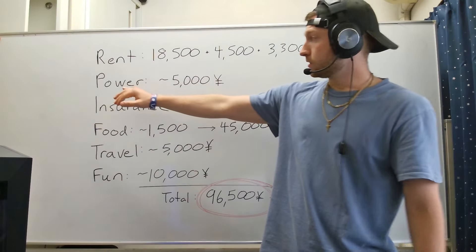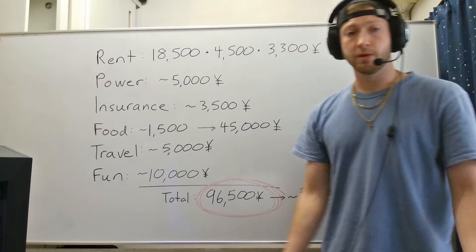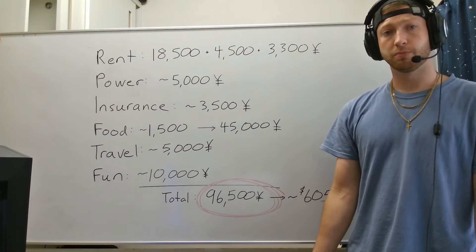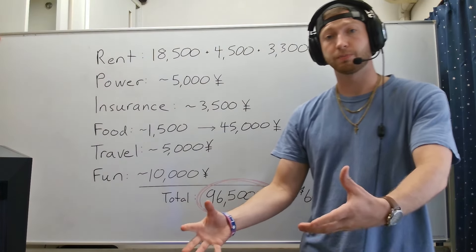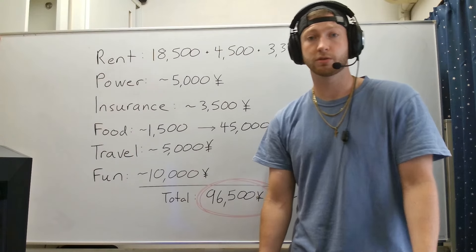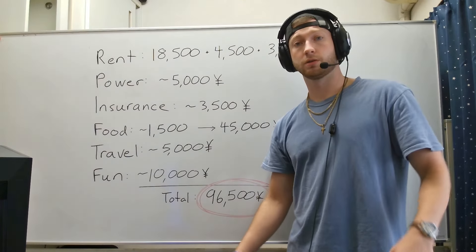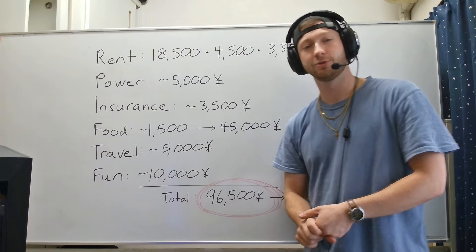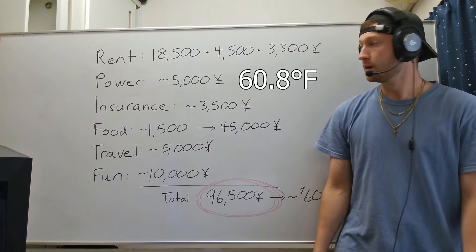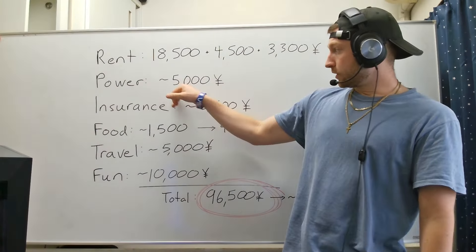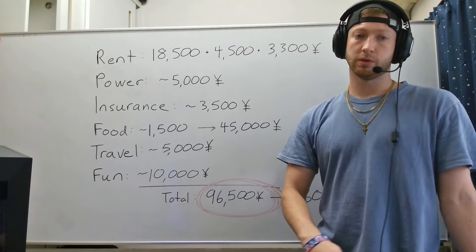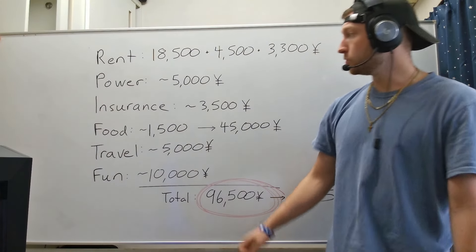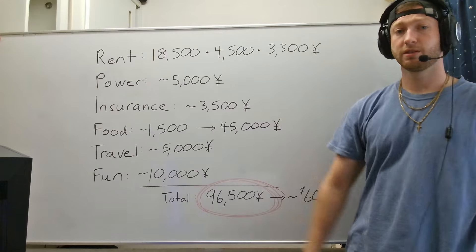So next thing is the power. For me, I use a little bit more power than most people. I have a huge PC. It's summer, so I use my AC a lot. I like it cold when I sleep, so I usually turn it all the way down to about 16 degrees Celsius. So it fluctuates around 5,000 yen. Now that it's summer, it's a little bit more. Back when it was winter, it was a little bit less. But usually it averages about 5,000 yen per month.